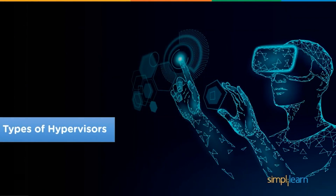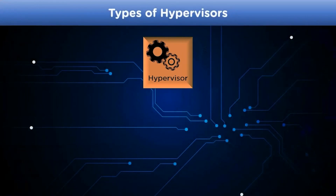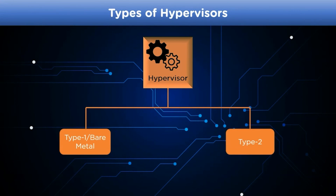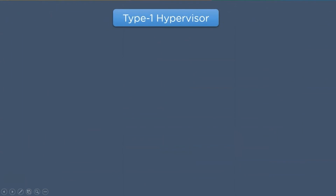There are two types of hypervisors. The first is the Type 1 hypervisor, also known as the bare metal hypervisor, which directly interacts with the hardware system and user resources. The second is the Type 2 hypervisor, which runs as an application on the host operating system and coordinates with the virtual machine for resource management.